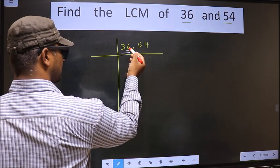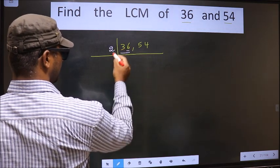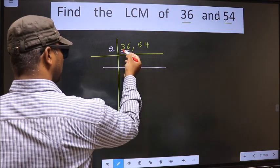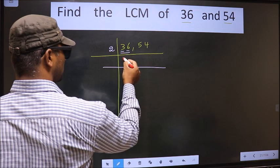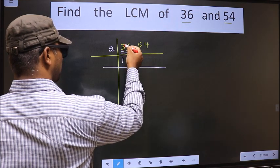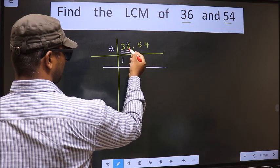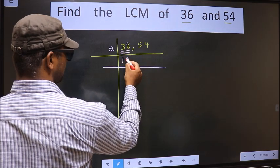Here last digit 6, even, so we take 2 here. The first number, 3. A number close to 3 in 2 table is 2, 1, 2. 3 minus 2, 1, 1 carried forward making it 16. When do we get 16 in 2 table? 2, 8, 16.